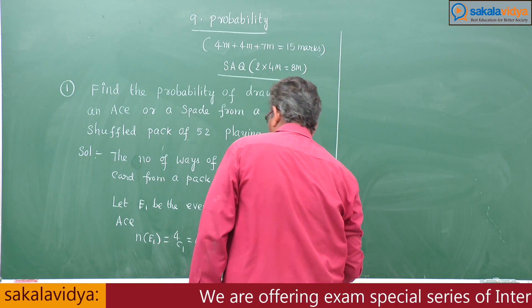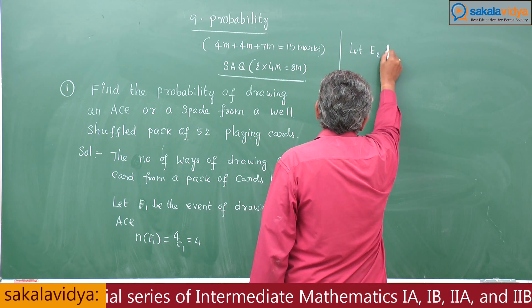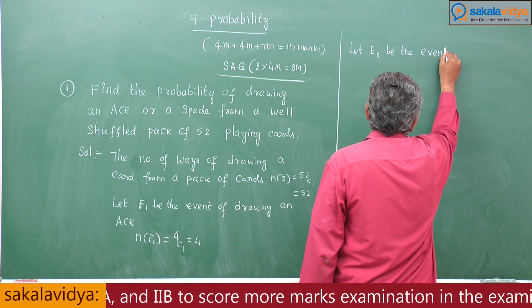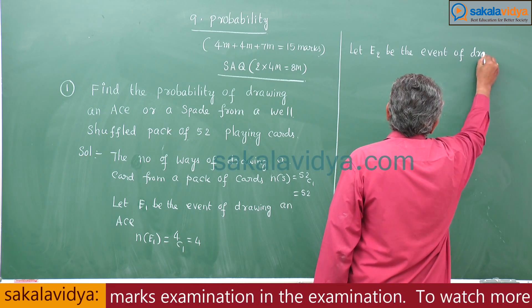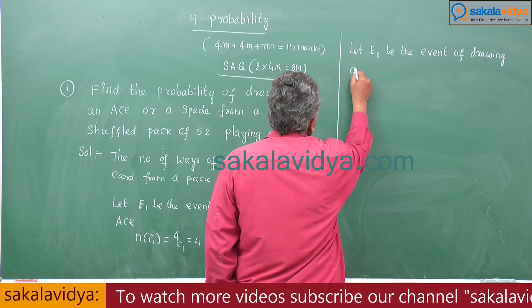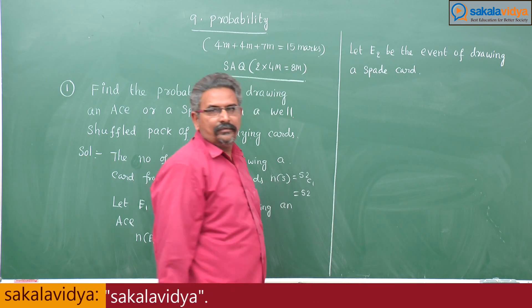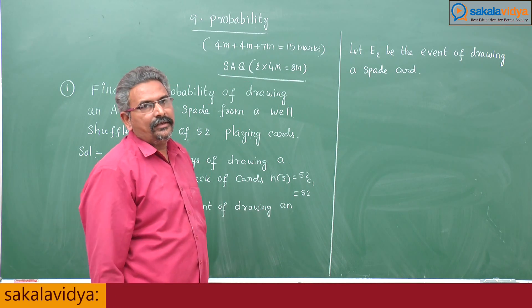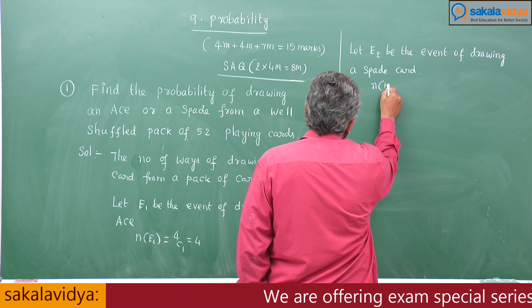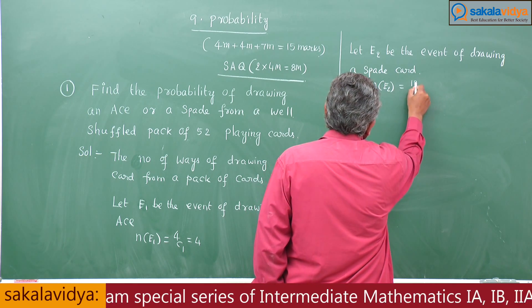Let E2 be the event of drawing a spade card. How many spades will be there? 13 spades. So n(E2) is equal to 13C1, so 13.